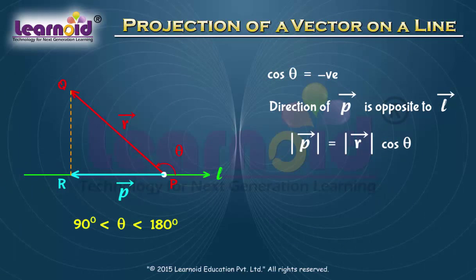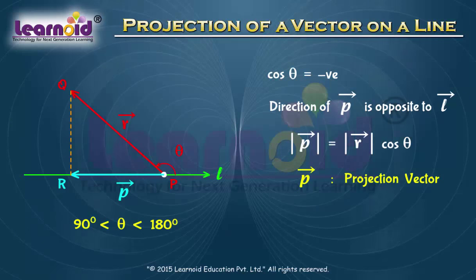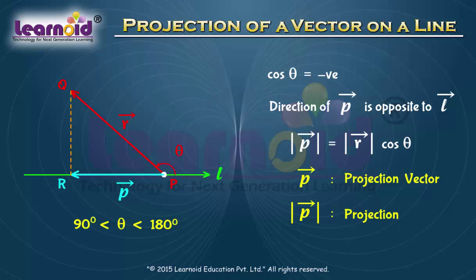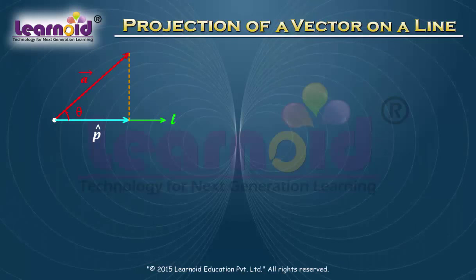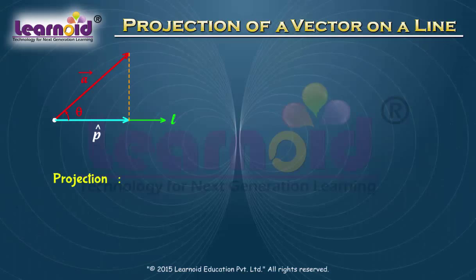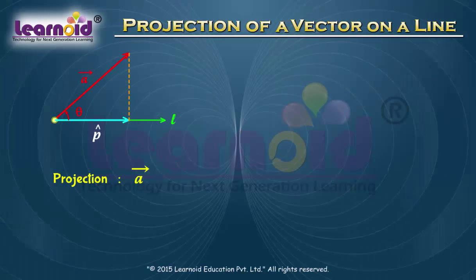The vector P along line L is called the projection vector, and the magnitude of vector P is called the projection of vector PQ along line L. If P-cap is the unit vector along line L, then the projection of a vector A on line L is given by vector A dot P-cap.